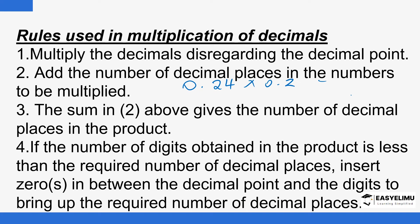Decimal places means the number of digits after the decimal point. In 0.24 there are two decimal places — 2 dps. In 0.2 there is one — 1 dp — totaling three dps. This means that the product is going to have three decimal places, so you have to make sure the final answer has three decimal places.